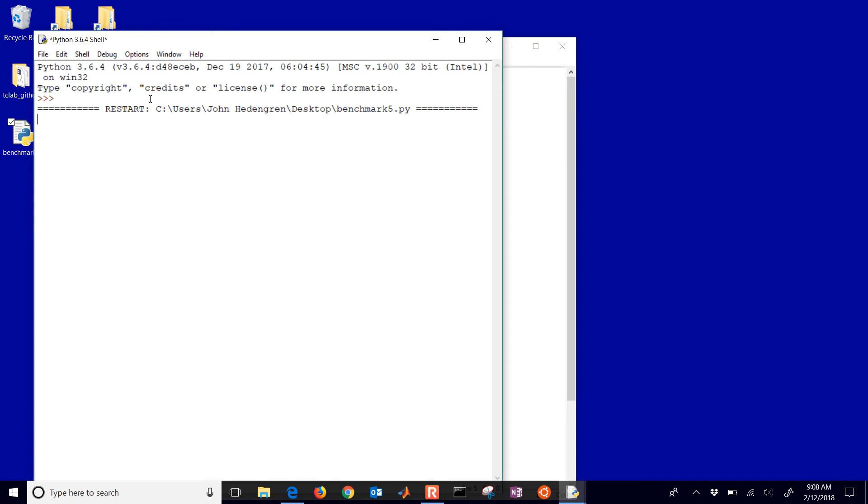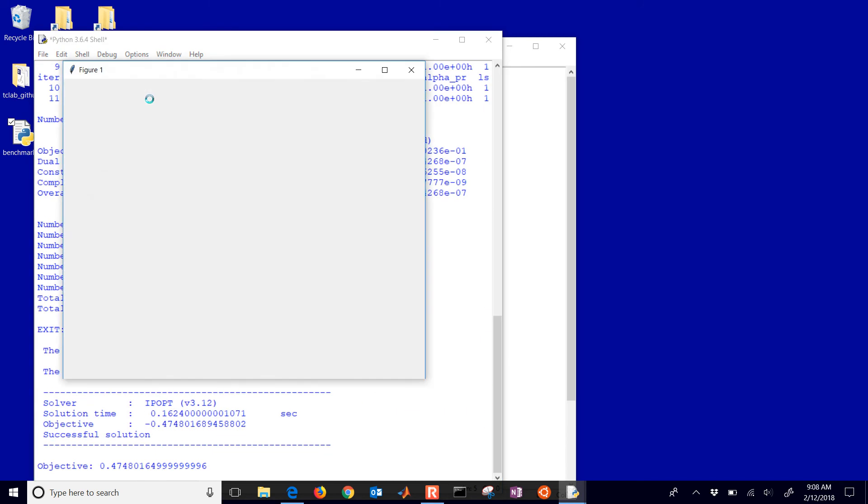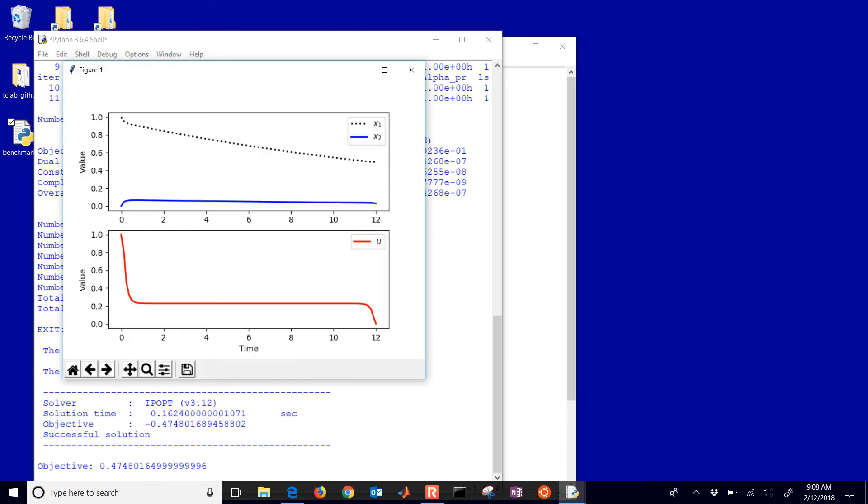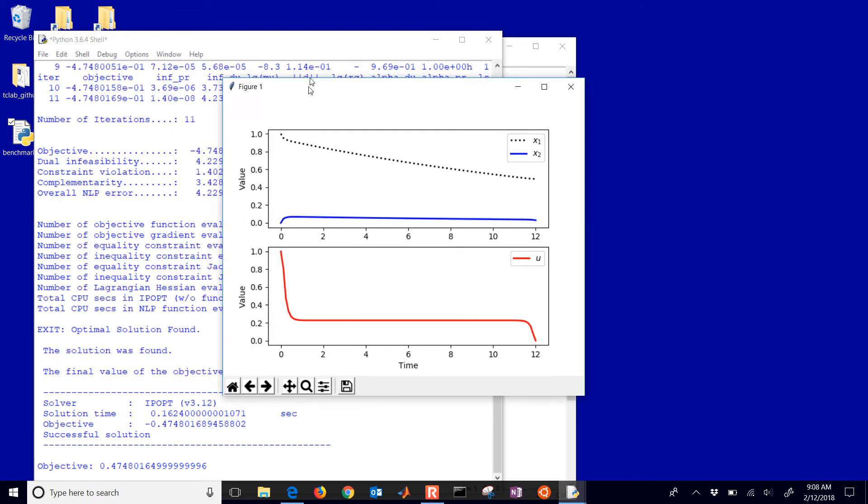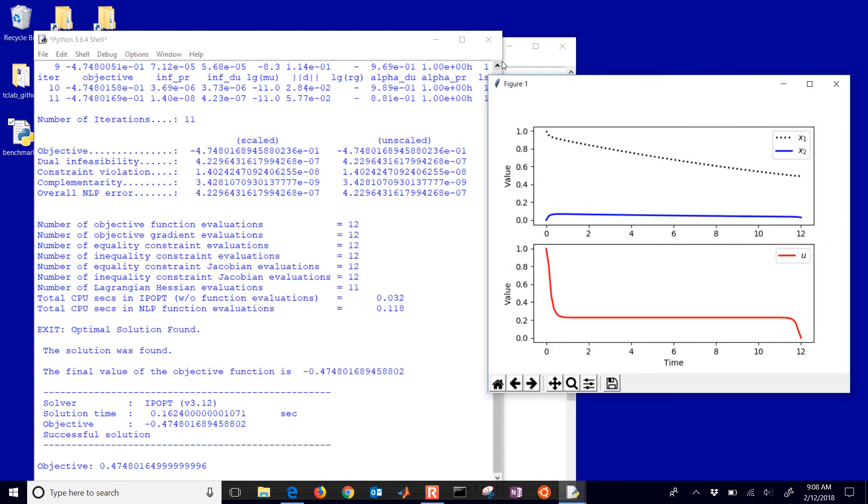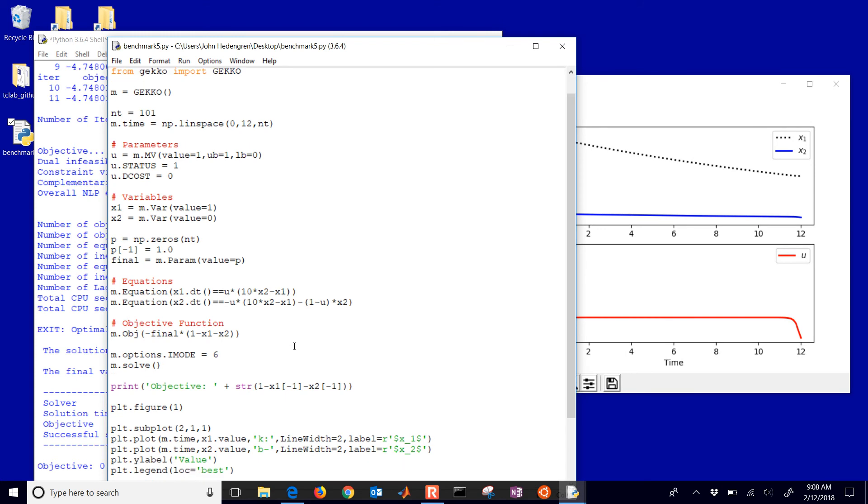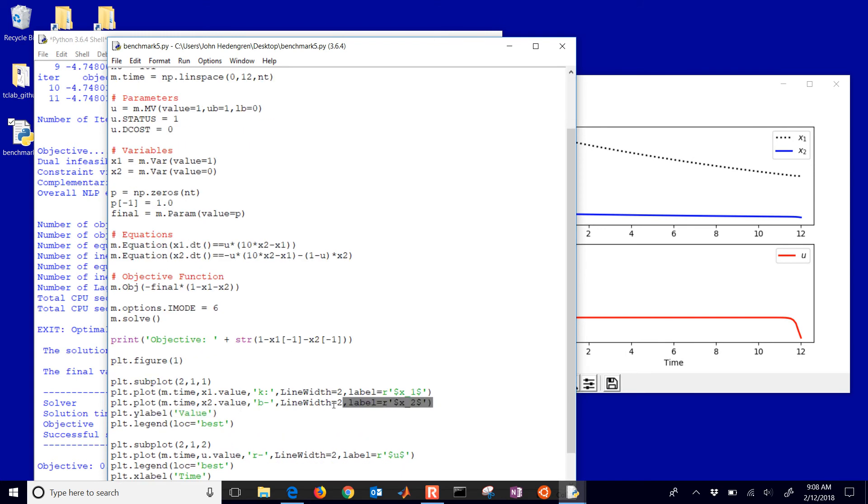When I run it with Python 3.6, it's going to optimize it. And there you'll see the values of u and x1 and x2. But let's say we want to add x3 in there as well, because that's really the one that we're trying to optimize.